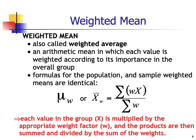The weighted mean, also called the weighted average, is an arithmetic mean in which each value is weighted according to its importance in the overall group. The formulas for the population and sample weighted means are identical — we differ only in notation, using the subscript w to indicate a weighted mean: mu sub w or x-bar sub w. We get the summation of the product of each weight with each data value, divided by the sum of the weights.